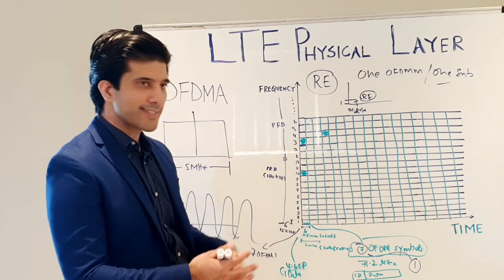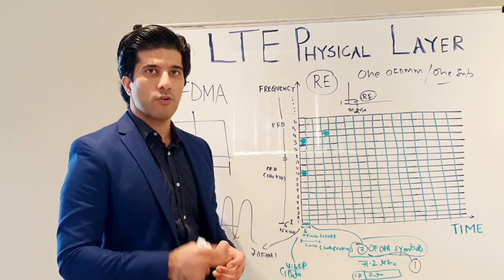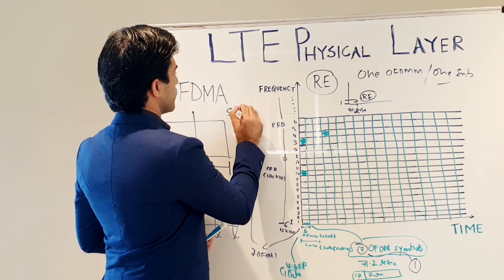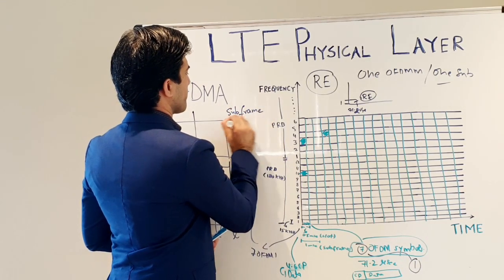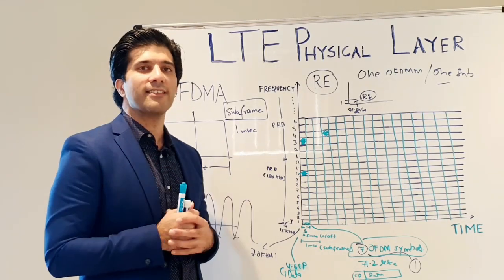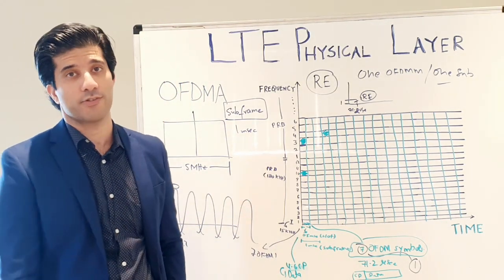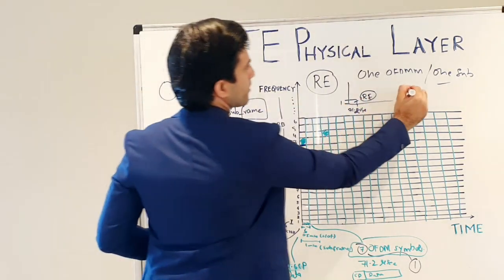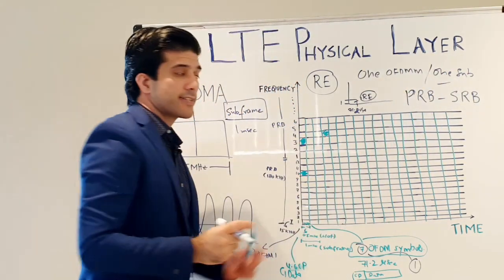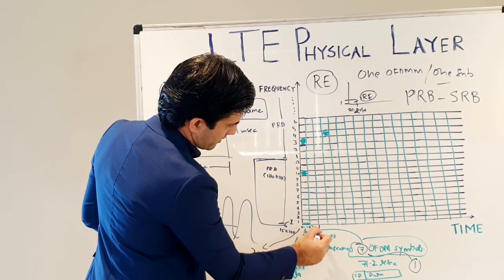Moving from the slot to the next level: if you combine two slots of 0.5 ms each, you get 1 millisecond containing two slots — this is called a subframe. One millisecond with two slots is a subframe. In LTE, scheduling is not based on the physical resource block alone; it is based on a scheduling resource block, or SRB. There is a difference between the PRB and the SRB.